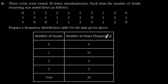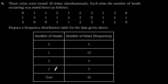So, from this distribution table we can observe that the number of times heads never occurred is 6, the number of times heads occurred once is 10, the number of times heads occurred twice is 9, and the number of times heads occurred thrice is 5, which gives a total of 30.